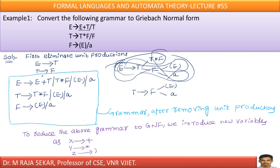E goes to T plus T — the original production E goes to T I cannot write, because I have to eliminate this unit production. New productions: T star F, left parenthesis E right parenthesis, and right parenthesis A. T star F, left parenthesis E right parenthesis, right by A.